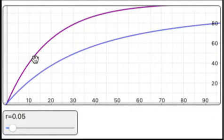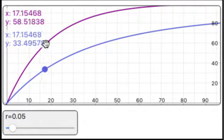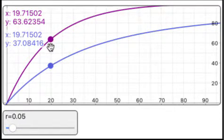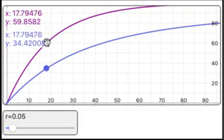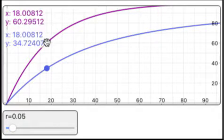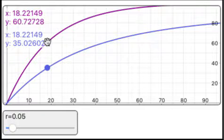If we look at the cumulative risk of rupture at 18.2 years using the purple plot, the cumulative risk of rupture is 60.72%.